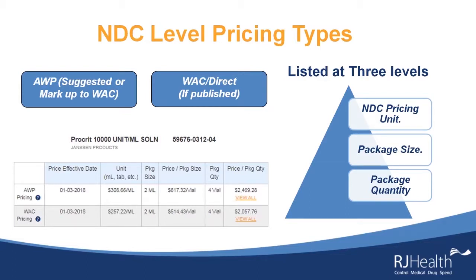We take all these NDCs from various sources as well as manufacturers and look at the drug component. From there, we link them to the appropriate HCPCS codes and look at the pricing for those individual NDCs. NDC-level pricing is a little different than code-level pricing. There are usually three different levels: the pricing unit, the package size, and the package quantity.